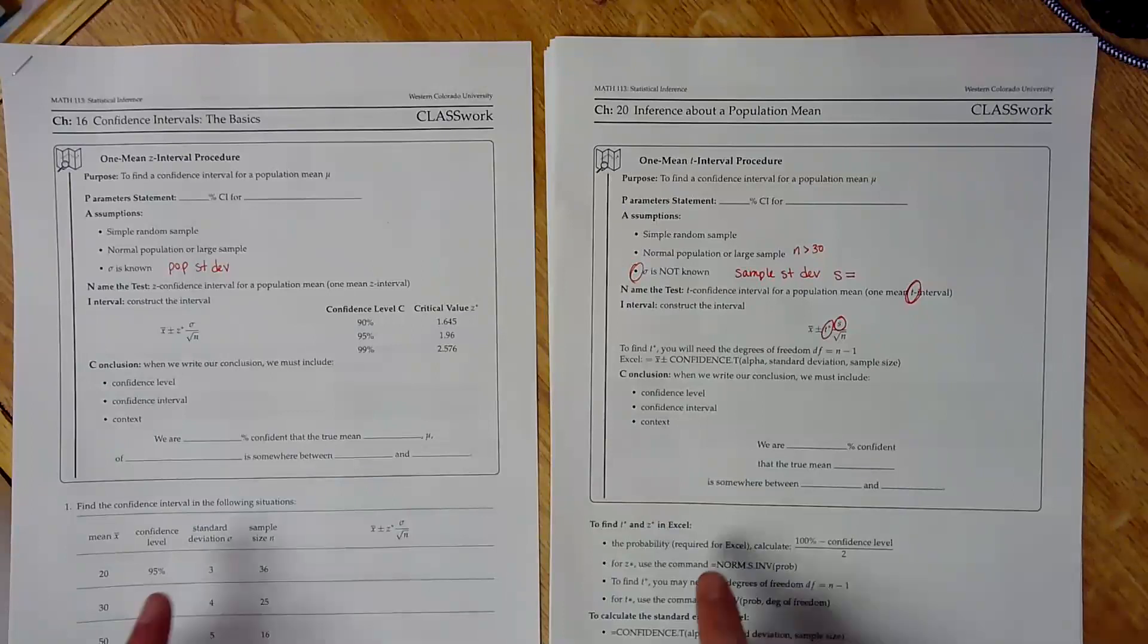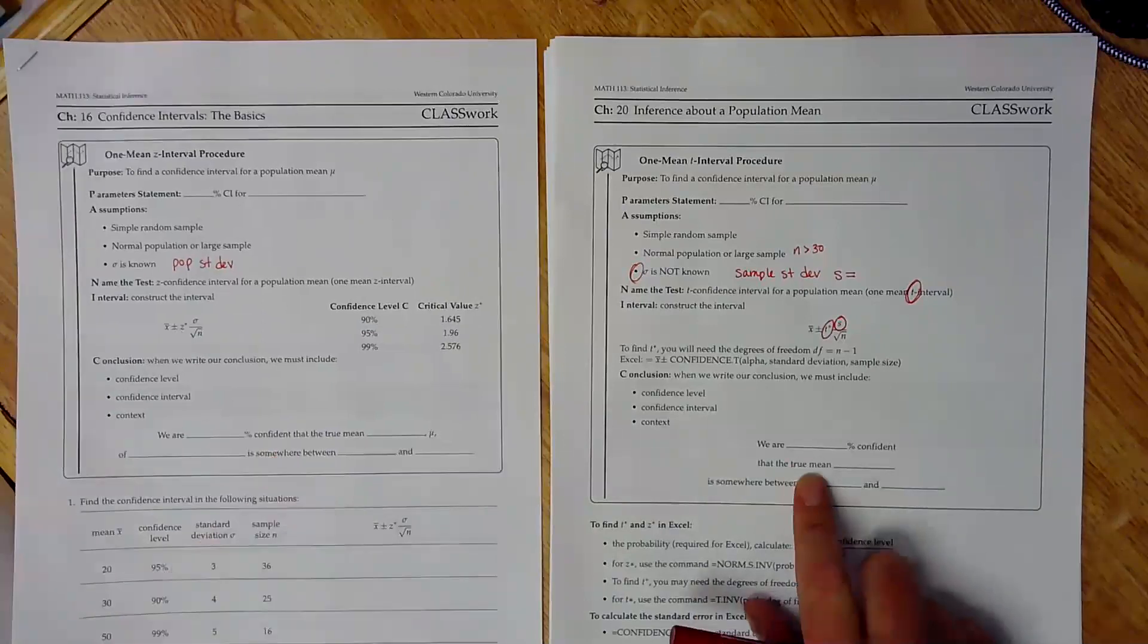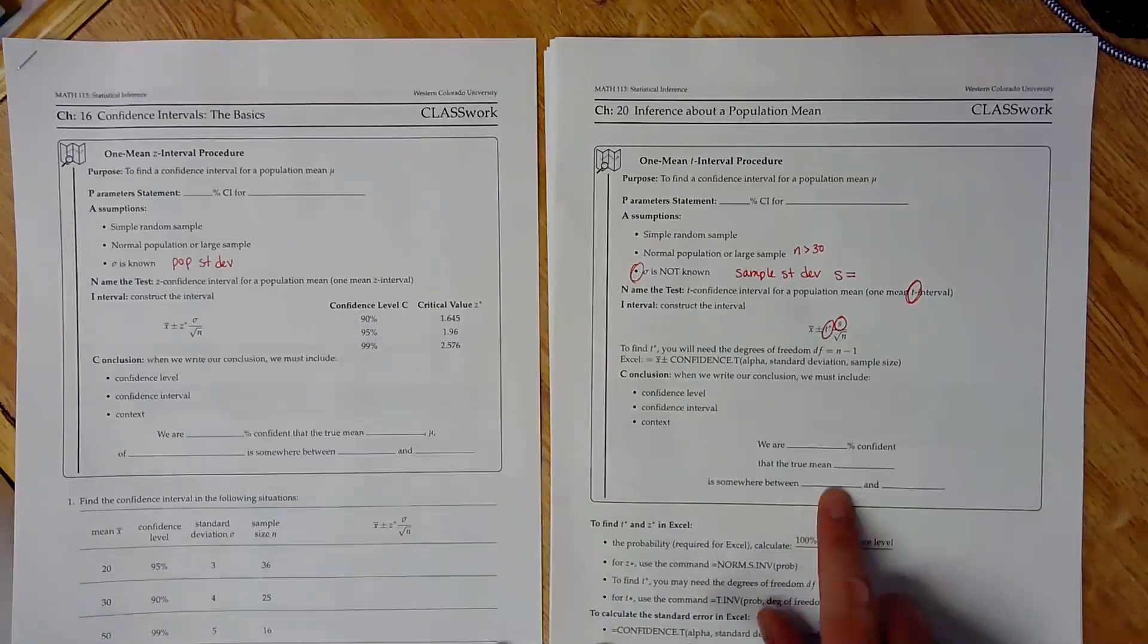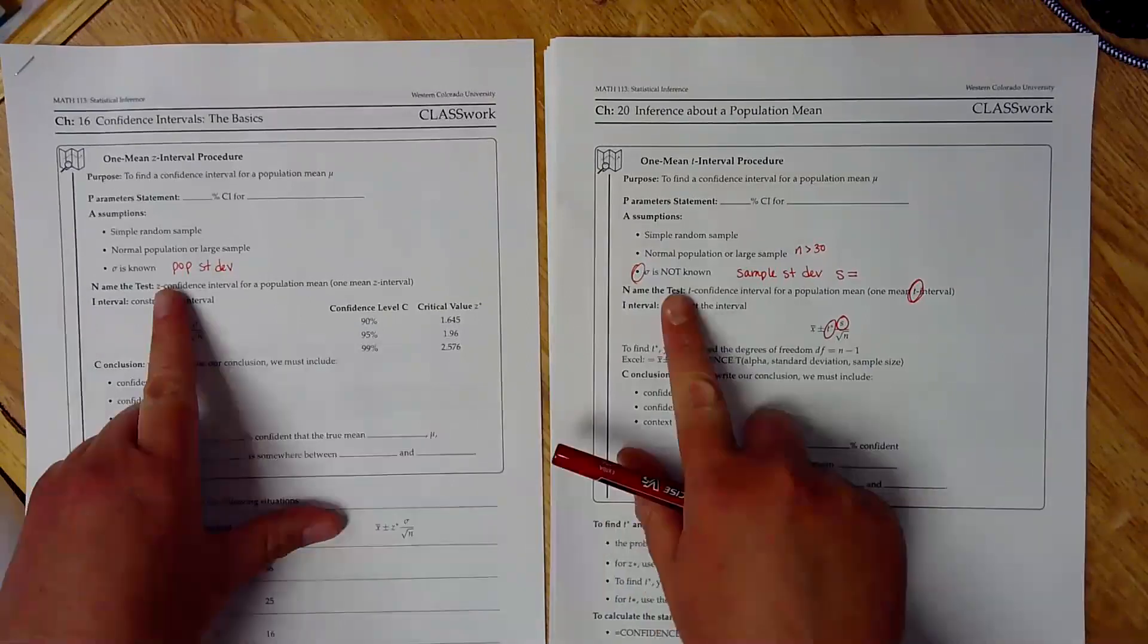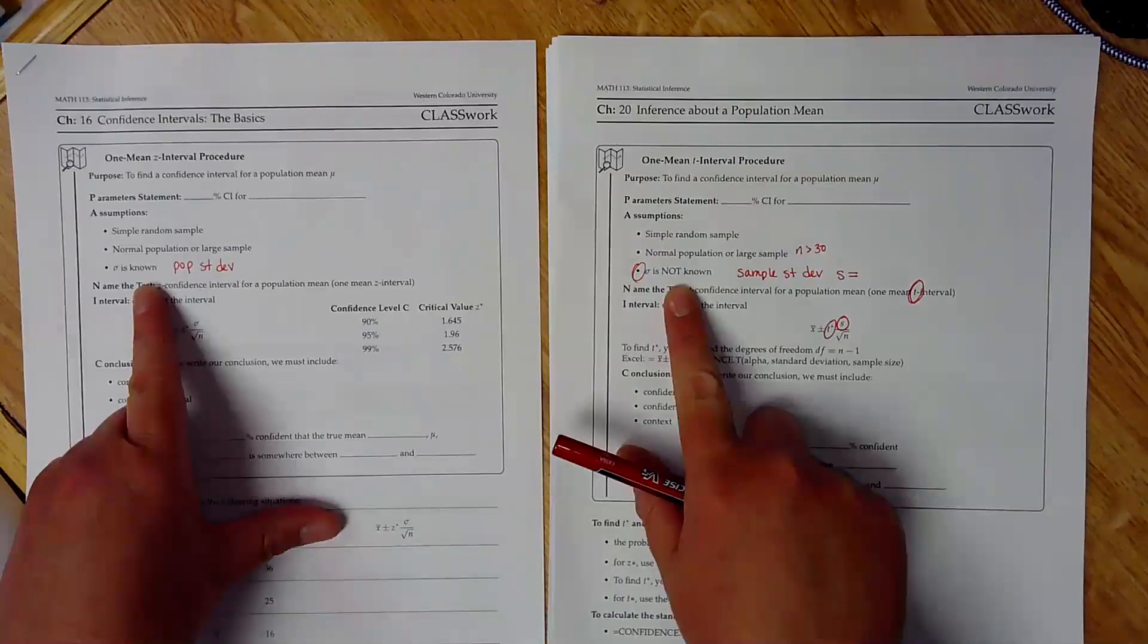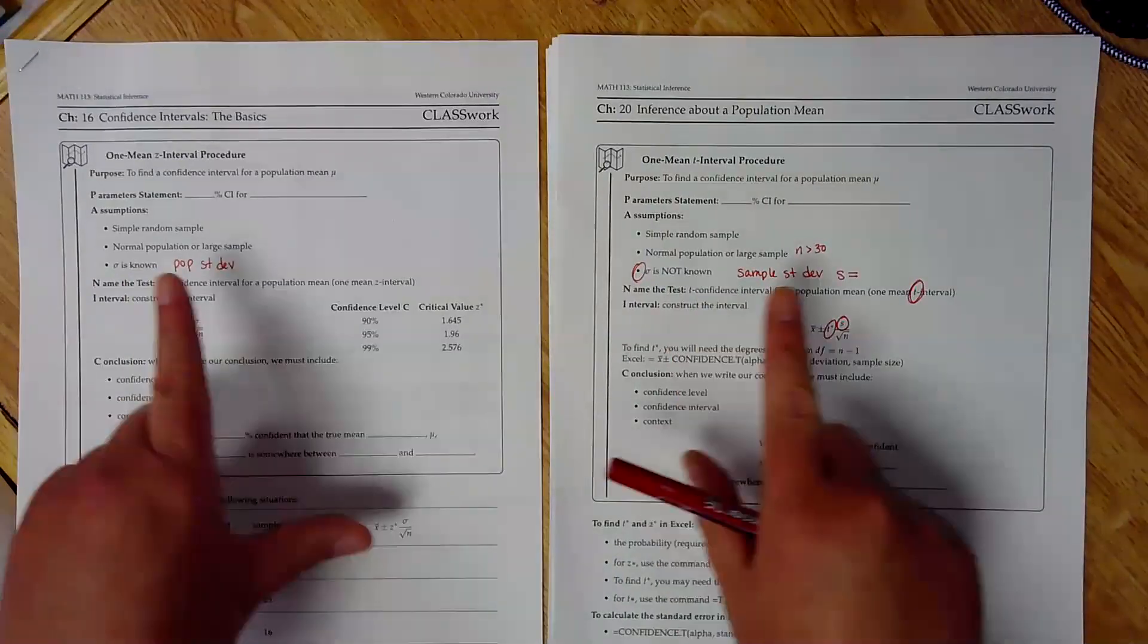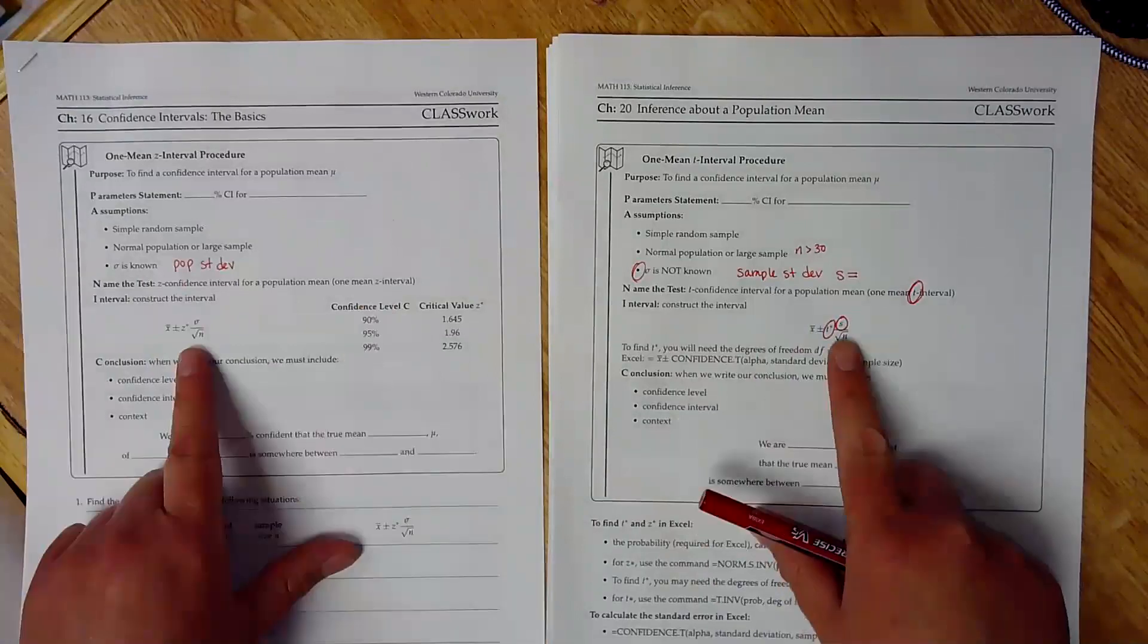And then our last step is the conclusion. Our conclusion is exactly the same. We are blank percent confident that the true mean, that you put some sort of context here, is somewhere between this number and that number. Okay, so our only changes here is in the one assumption. And that one assumption actually tells us whether, if we have our population or our sample standard deviation, tells us exactly what procedure we're using. So either a z or a t. And then the formula has a slight little change. Otherwise, this process is exactly the same.